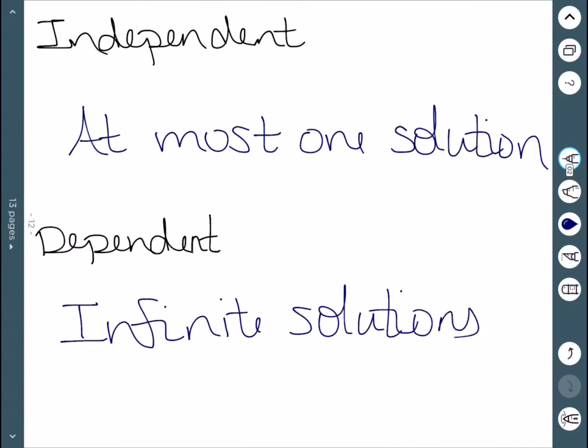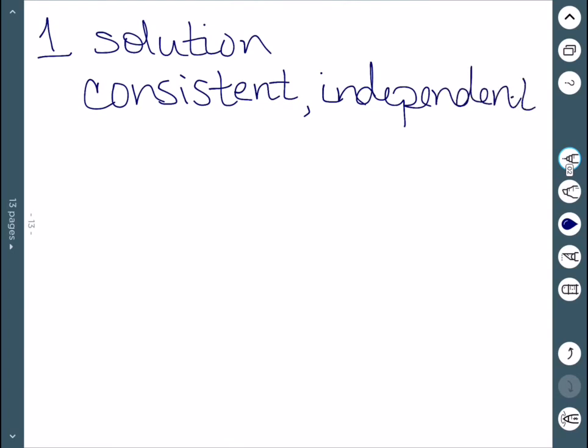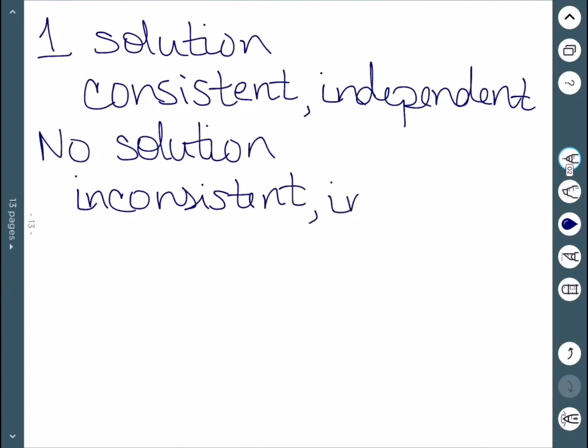So now that we have this, we can look at our three possibilities. The first option was one solution. This system is consistent and independent. No solution is inconsistent and independent.